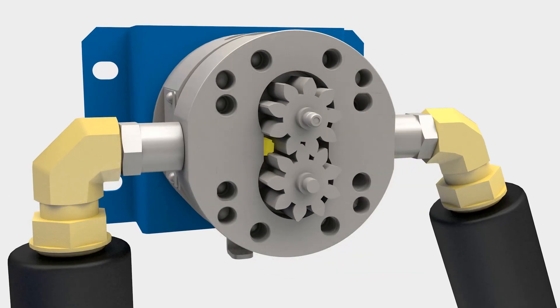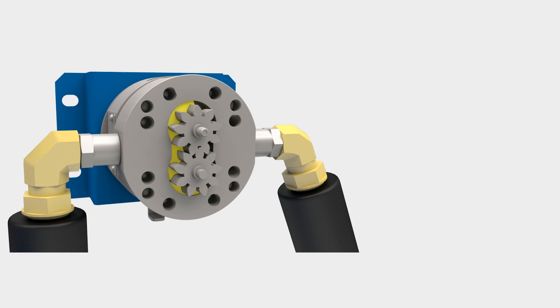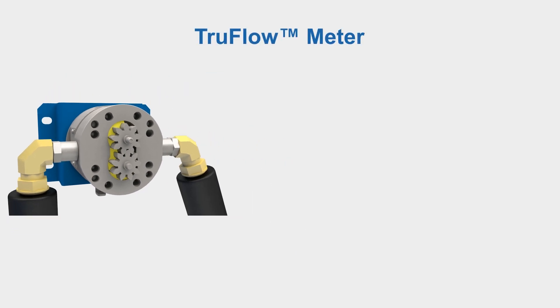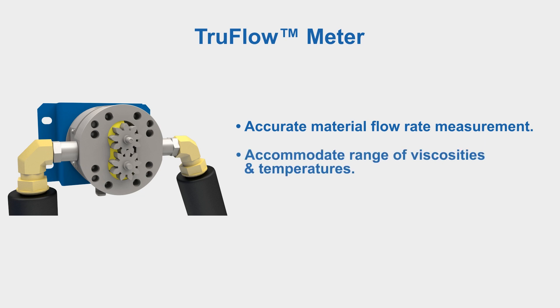TrueFlow meters accurately measure the actual material flow rate being delivered to the point of application. They can be installed on new or existing production lines.